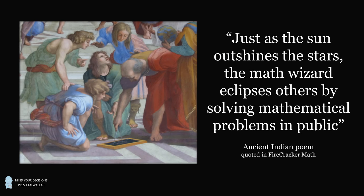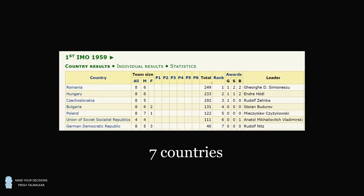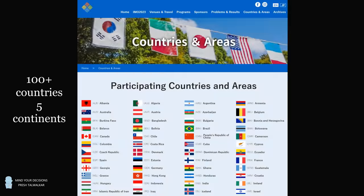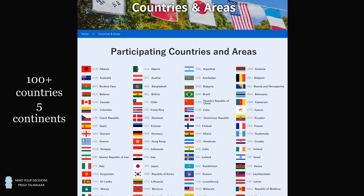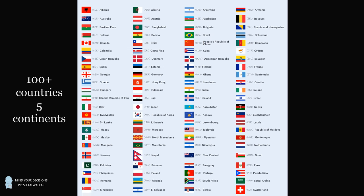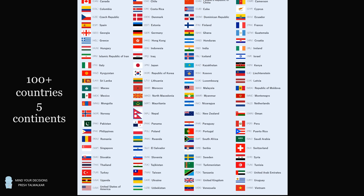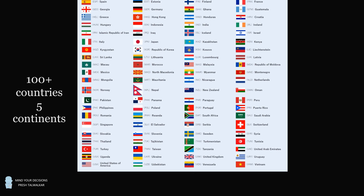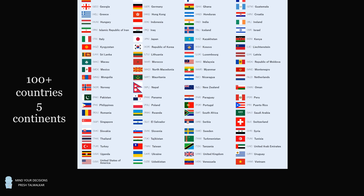Hey, this is Presh Talwalkar. Mathematical competitions date back to ancient times. To quote an Indian poem, just as the sun outshines the stars, the math wizard eclipses others by solving mathematical problems in public. In modern times, the very first International Mathematical Olympiad was held in Romania in 1959 and had seven countries. The IMO has since expanded to over 100 countries across five continents. I'm sure its founders would be delighted that decades later, people around the world are searching YouTube just for Olympiad problems to give themselves a mathematical challenge.